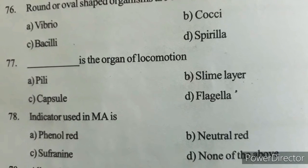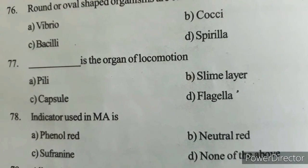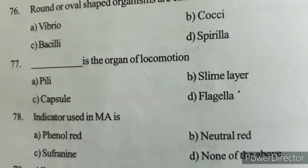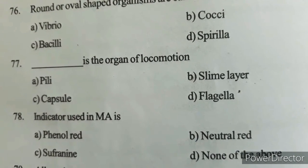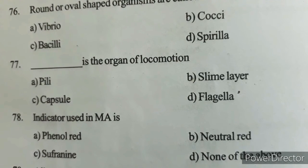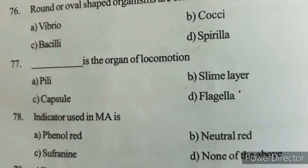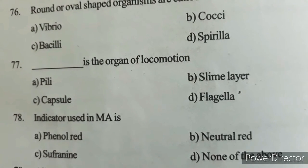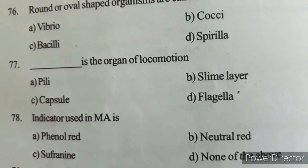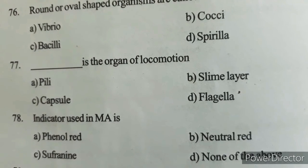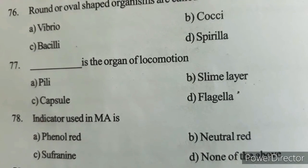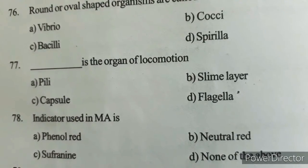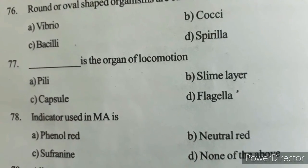Next question: The indicator used in MacConkey agar is? Option A) Phenol red, Option B) Neutral red, Option C) Safranin, Option D) None of the above. Correct answer: Option B — Neutral red.